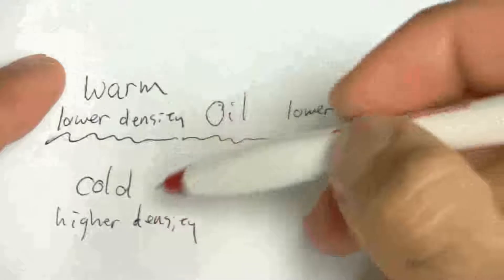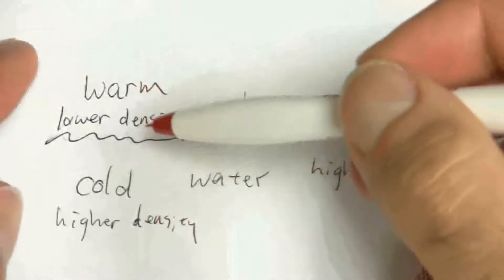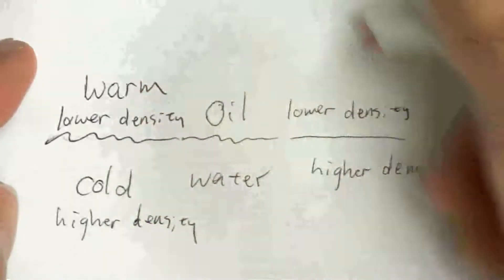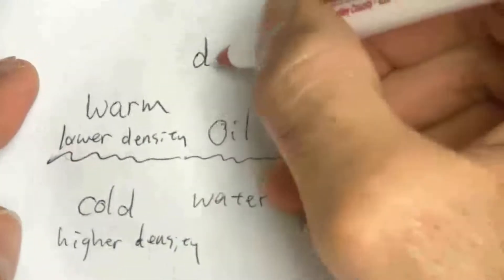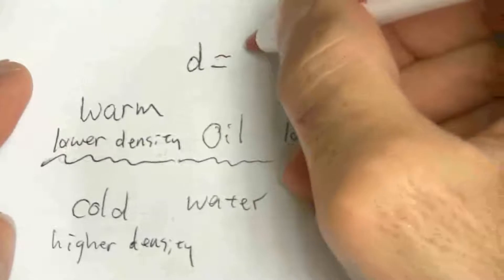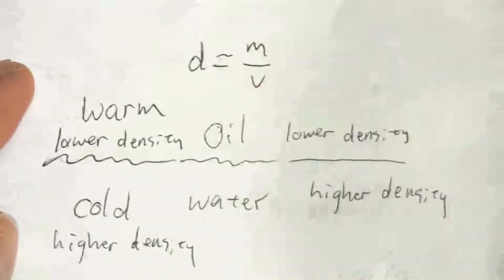So the fact that warm air has a lower density tells us, you know, you remember the density. Density equals what? Mass divided by volume, right?